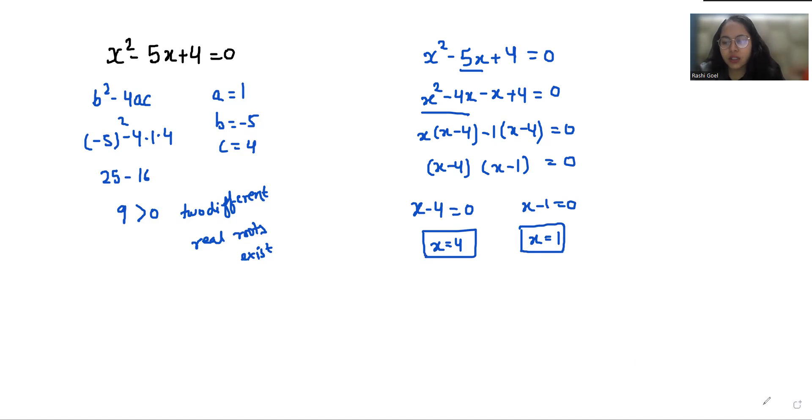Now we are going to solve this same quadratic equation by quadratic formula. So x square minus 5x plus 4 by quadratic formula is x equals negative b plus minus square root b square minus 4ac by 2a.